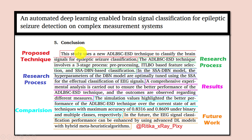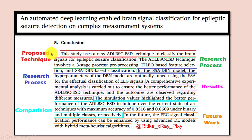For example, in one research paper the conclusion is just six lines long. In those six lines, they briefly summarize the key findings: the first line is about the proposed technique, the next is about the research process, then the results and comparison, and finally future work.